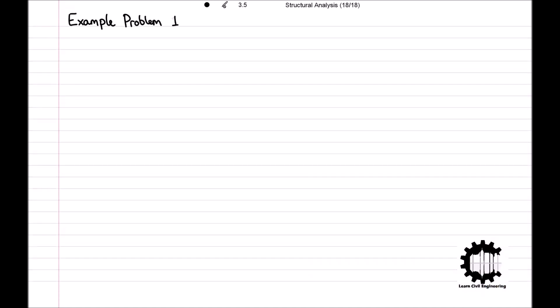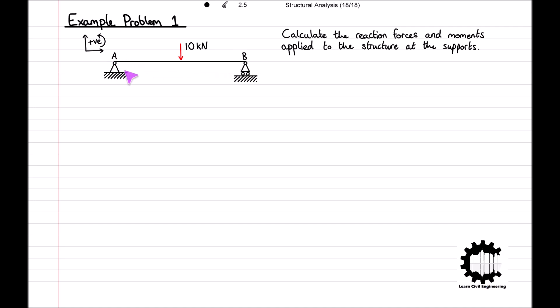Let's take a look at a simple example. We have a beam that is supported by a hinge support at point A and a roller support at point B. The weight of the beam is negligible, however it is supporting a weight of 10kN in the centre, hence the concentrated force of 10kN in the diagram. The hinge support transmits forces in any direction and therefore we can decompose the reaction force into a horizontal reaction and vertical reaction force, denoted Rxa and Rya respectively.